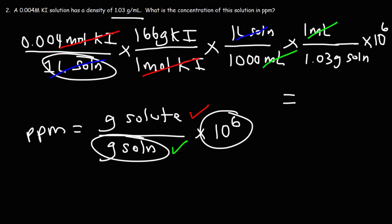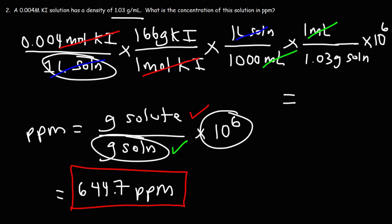Now let's do the math. Multiply by the numbers on top and divide by the numbers on the bottom: 0.004 times 166, divide by 1,000, divide by 1.03, then multiply by 1 times 10 to the sixth. The answer is 644.7 parts per million. That is the concentration of the KI solution in PPM, and now you know how to convert from molarity to PPM.